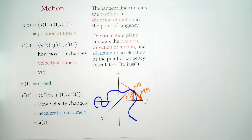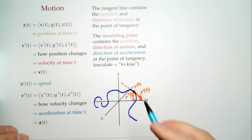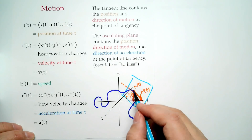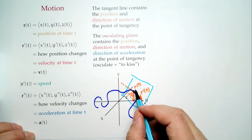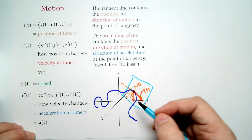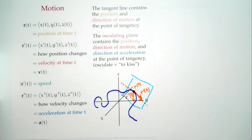A plane can store a point and two directions, so there's a plane containing the point of tangency, the direction of motion, and the direction of acceleration. When it exists, it's unique. It's called the osculating plane.